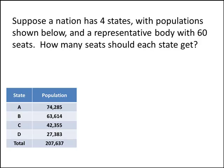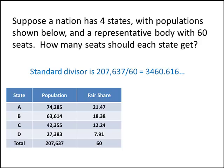If you haven't watched the introduction video, you should click on the link below and watch that now. As we learned in that video, we can figure out the fair shares for each state by using the standard divisor, which is the total population of the entire country divided by the 60 seats. We get those fair shares by taking the population of each state and dividing by the standard divisor. The fair shares tell us how many seats each state should get, but the problem is that those numbers aren't whole numbers.